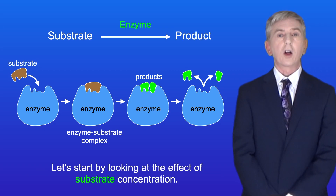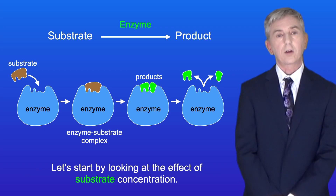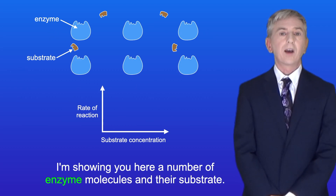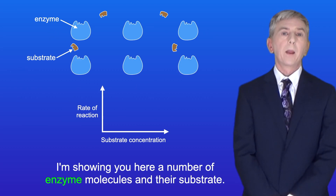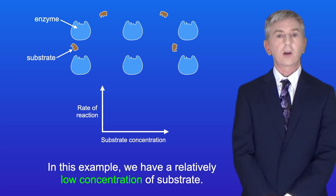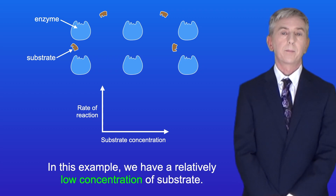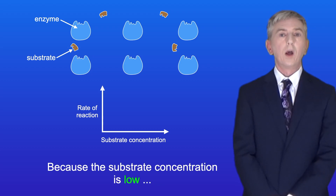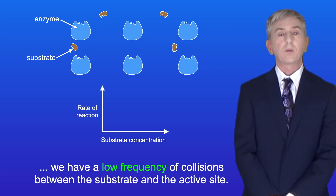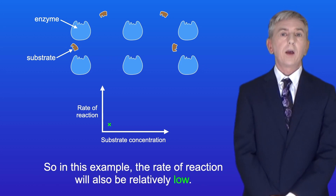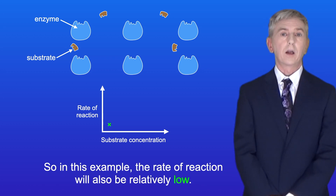Let's start by looking at the effect of substrate concentration. I'm showing you here a number of enzyme molecules and their substrate. In this example we've got a relatively low concentration of substrate. Because the substrate concentration is low, we've got a low frequency of collisions between the substrate and the active site, so the rate of reaction will also be relatively low.